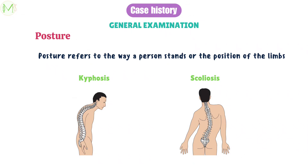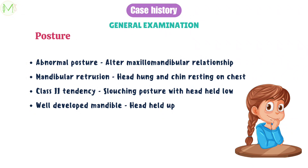The next thing we need to examine is posture. Posture refers to the way a person stands or positions their limbs. Abnormal posture can predispose to malocclusion due to alteration in the maxillomandibular relationship. Examples include kyphosis and scoliosis — kyphosis refers to forward bending and scoliosis refers to lateral bending. Any such abnormal posture can alter the maxillomandibular relationship, which in turn predisposes to malocclusion, and can also accentuate existing malocclusion.